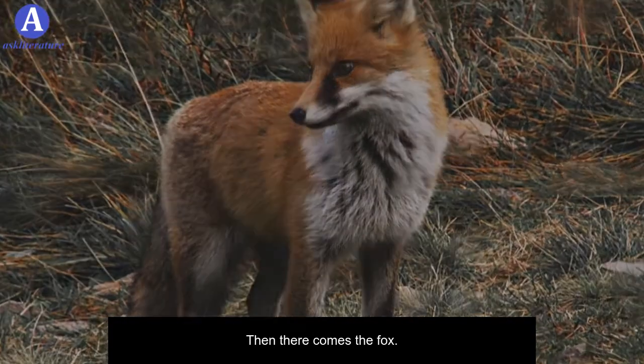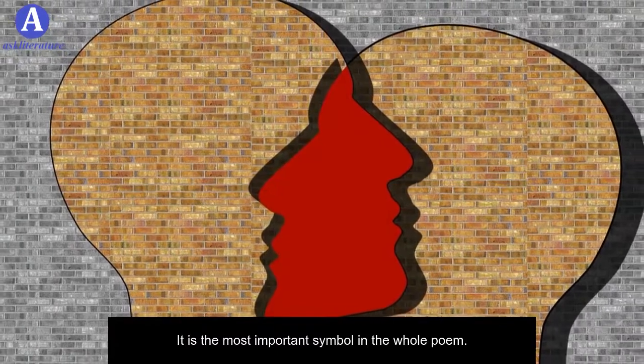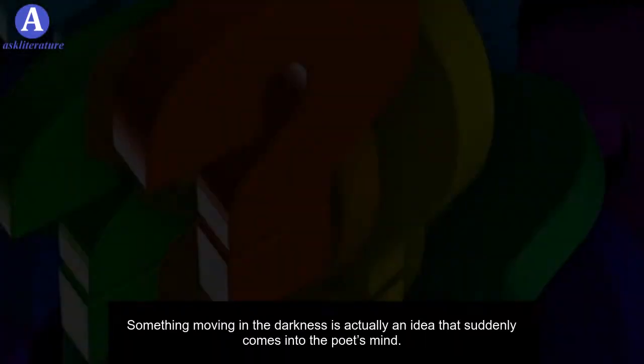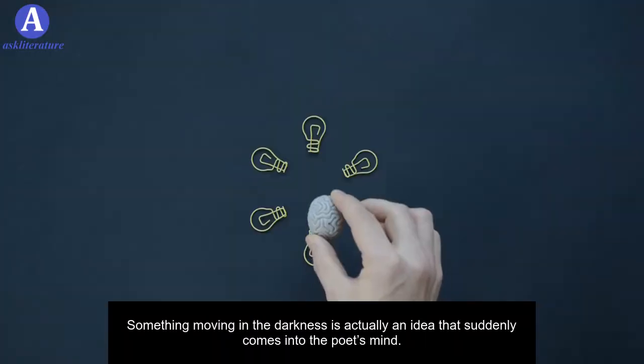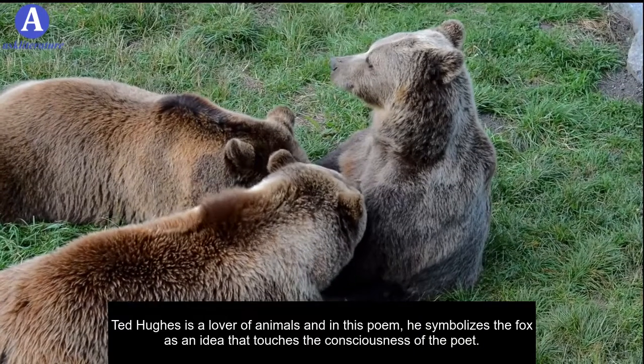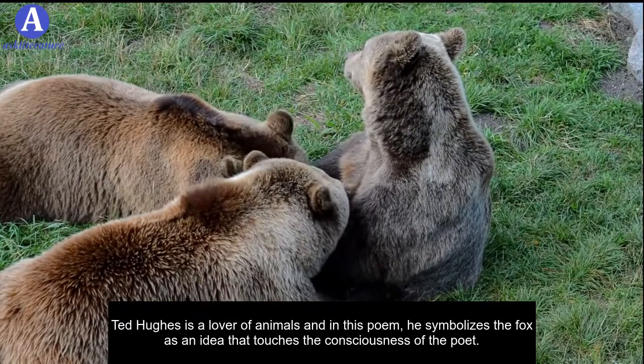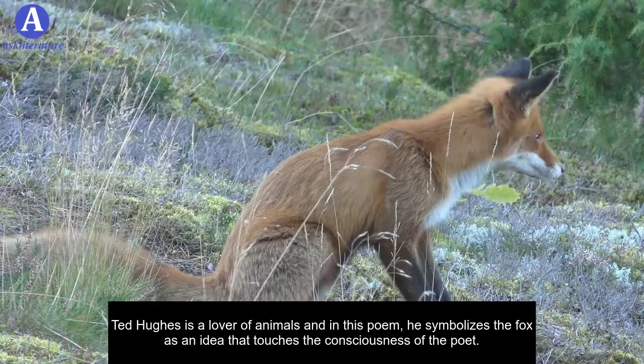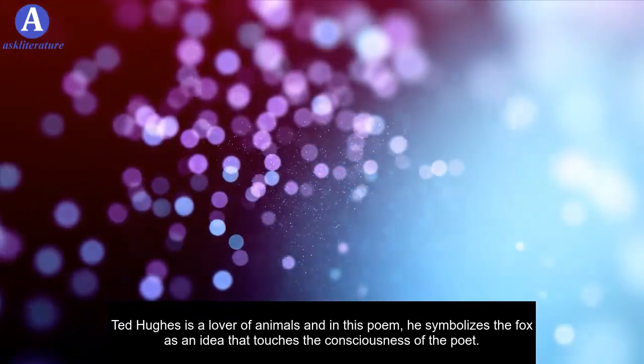Then there comes the fox. It is the most important symbol in the whole poem. Something moving in the darkness is actually an idea that suddenly comes into the poet's mind. Ted Hughes is a lover of animals and in this poem, he symbolizes the fox as an idea that touches the consciousness of the poet.